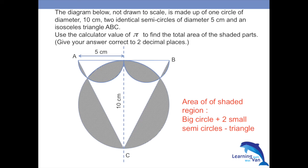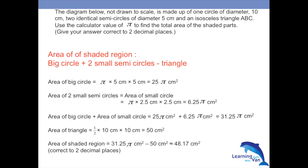So how to solve this question is as simple as: area of the shaded region = big circle + two small semicircles − triangle. Plug in all your figures and you should get the answer correctly. Don't make careless mistakes — once you recognize this, you should be able to get 8.17 using the calculator pi value, correct to two decimal places.